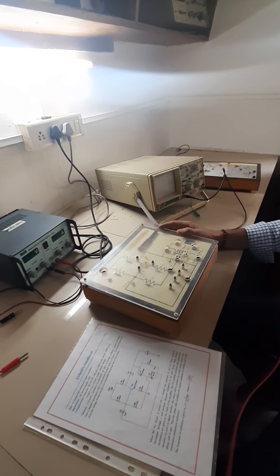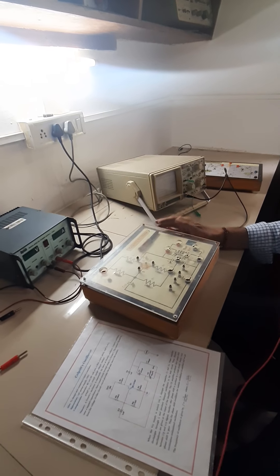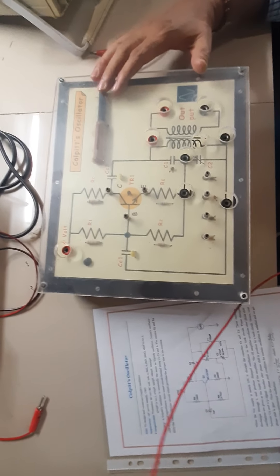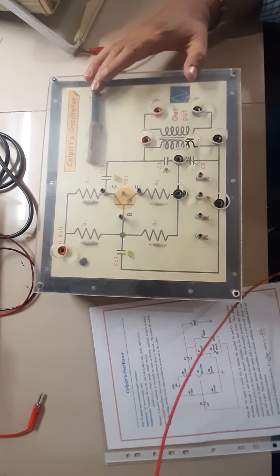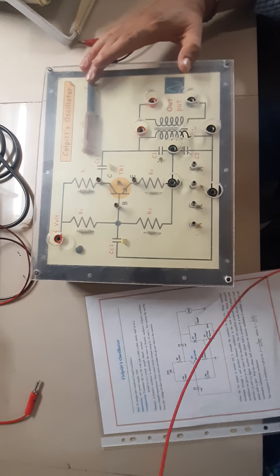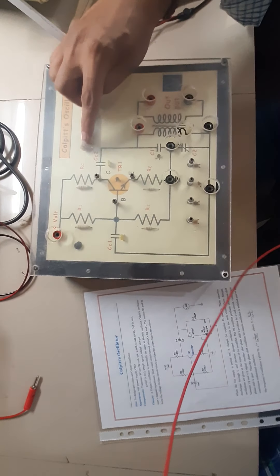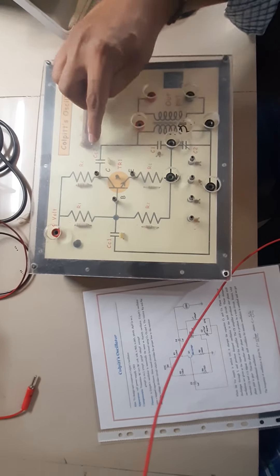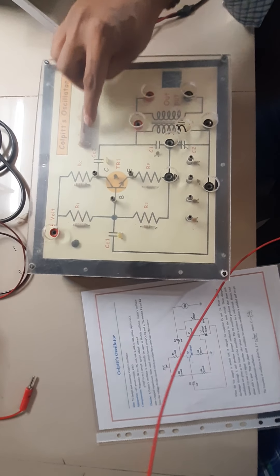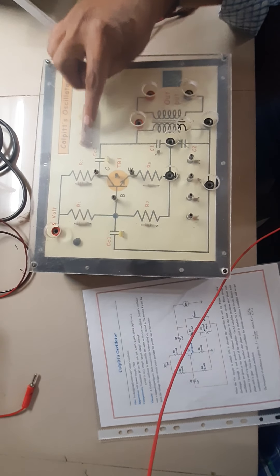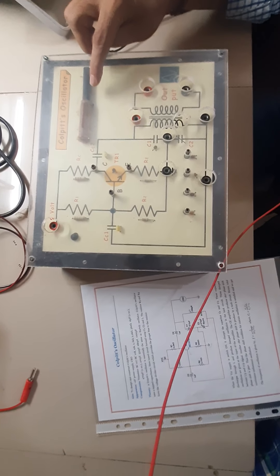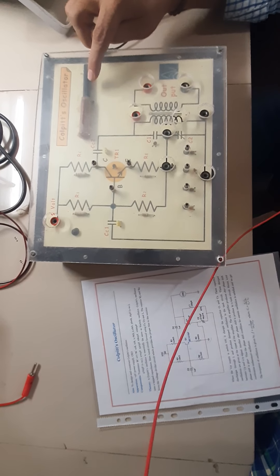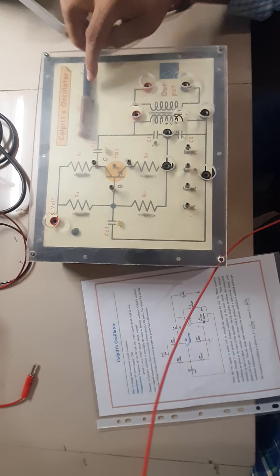Now we are discussing the Colpitt Oscillator. This is the board for the Colpitt Oscillator. We have to find out the value of this — what is this? This is an inductor. We need to find out the value of the inductor.